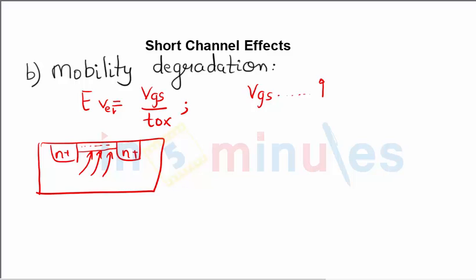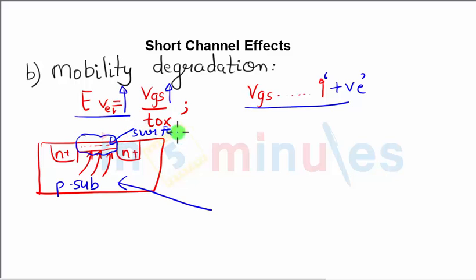Now when these electrons were moving freely in the substrate there was no problem, but now because of this positive voltage increasing on VGS, more number of electrons are attracted towards the channel. As E vertical is increasing, more number of electrons are attracted towards the surface of the substrate.